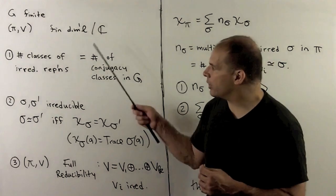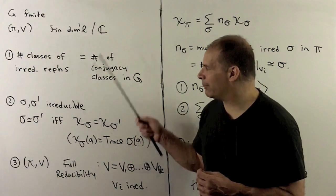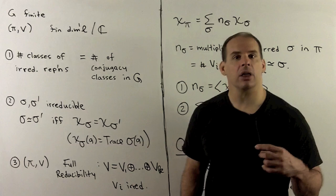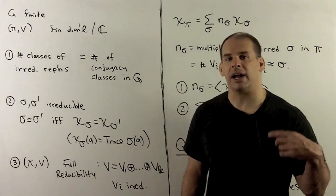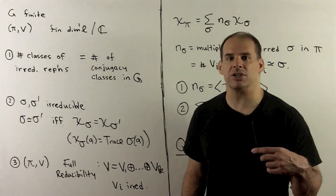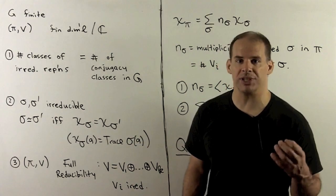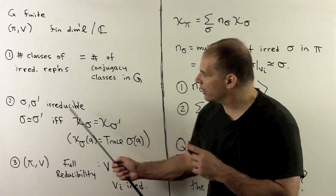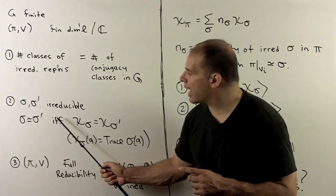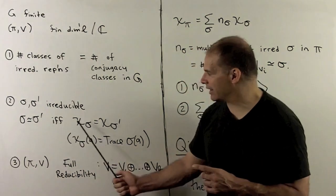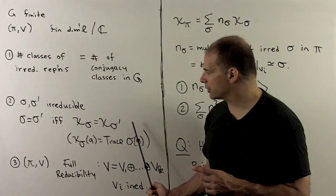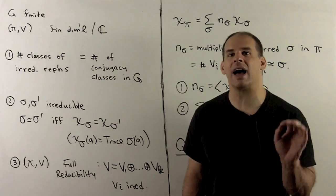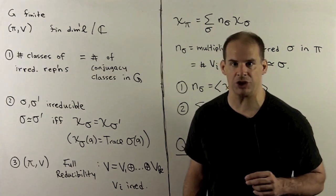Here we have a classification by characters. The first part says there are only finitely many classes of irreducible representations. The way I can tell whether these are equal or not is just by checking the characters. So once I write down a character table for a group, I have a classification.